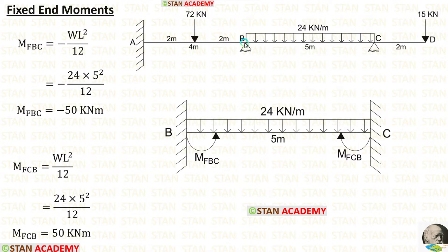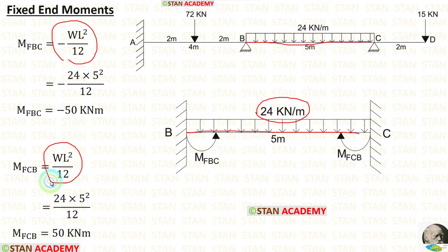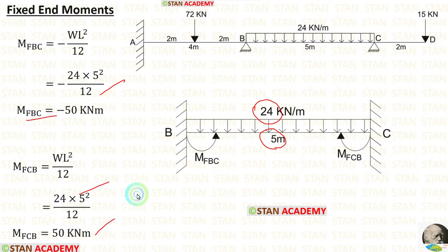Now let us calculate the fixed end moments in span BC. In span BC, there is a UDL of 24 kN per meter acting for the full span. The formulas are M_BC = −WL²/12 and M_CB = +WL²/12. With W = 24 and L = 5, we calculate M_BC and M_CB.